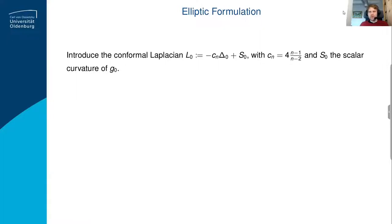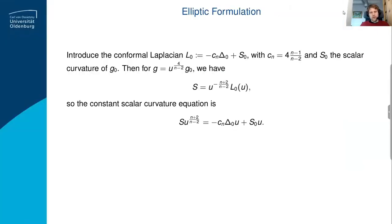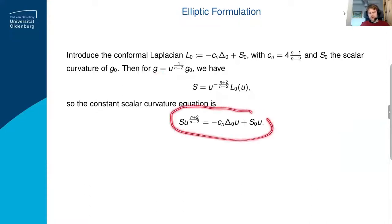How do you attack that problem? You first write down what it means for the conformally changed metric to have constant scalar curvature. I'm introducing the so-called conformal Laplacian, which is just the Laplacian plus the scalar curvature of the original metric times a constant c_n. As a slightly long exercise in differential geometry, you can show that if you change the metric conformally, the scalar curvature of the changed metric is given by a specific equation — you can also look it up on Wikipedia.